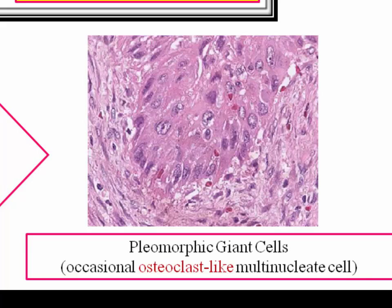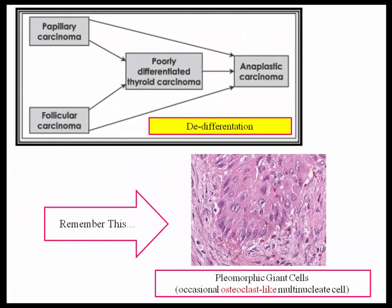The giant cell can also be seen in granulomatous thyroiditis. The patient with granulomatous or viral thyroiditis is younger and presents with a tender enlarged gland and will also be acutely hyperthyroid. In anaplastic carcinoma, the patient is older and presents with a palpable, non-tender neck mass. There shouldn't be any confusion between the two.